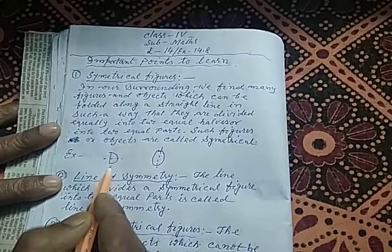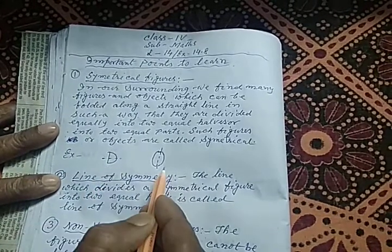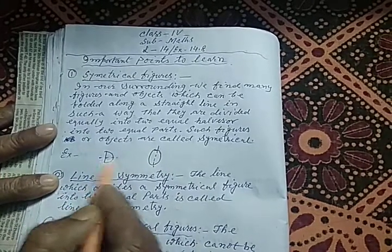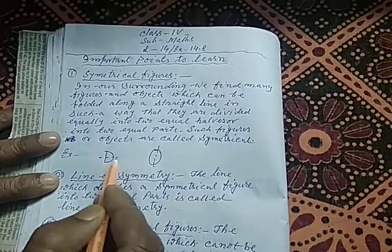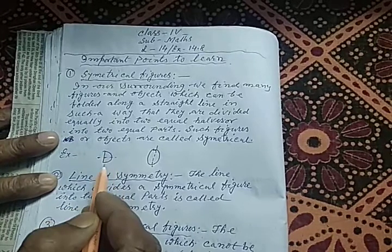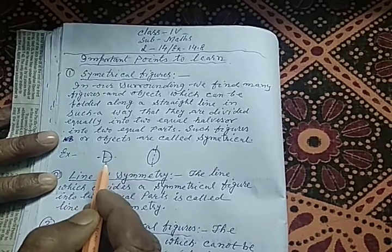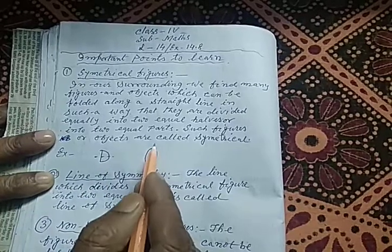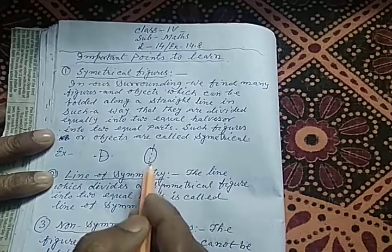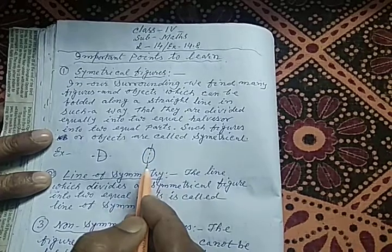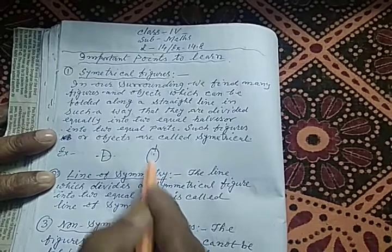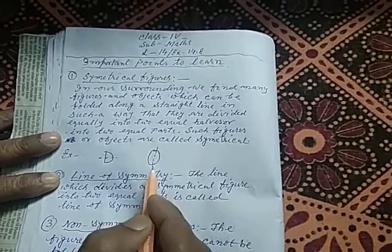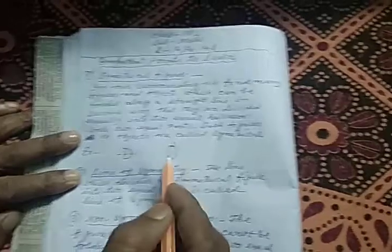For example, this is a letter D and this is a letter O. If you draw the line of symmetry along this horizontally, you can fold D into two equal parts. Similarly, for the letter O, if you fold it along a straight vertical line, you will get two equal parts.